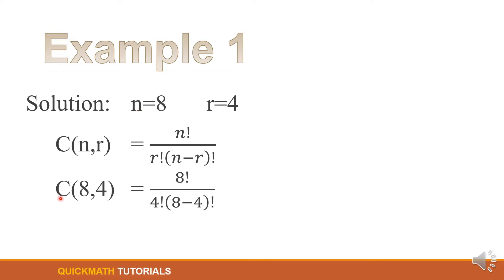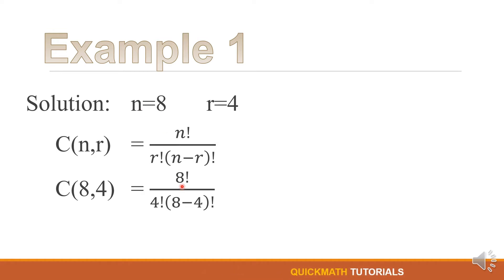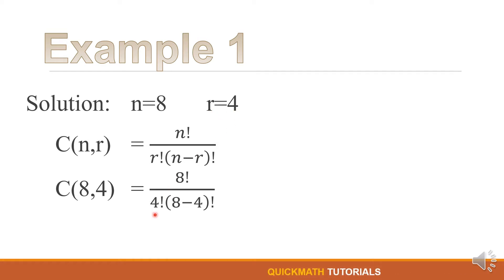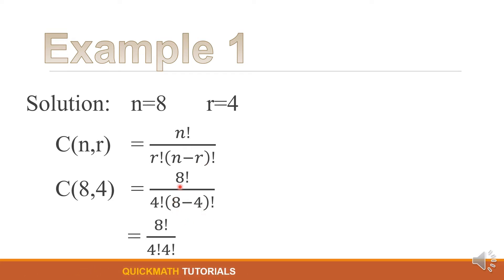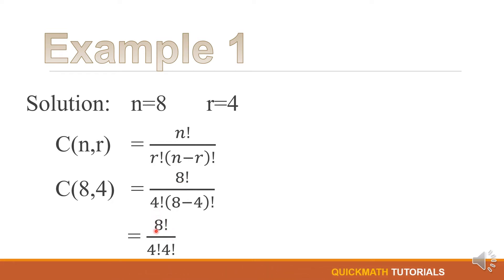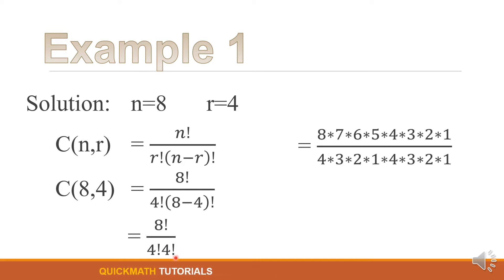We have the combination of 8 objects taken 4 at a time is equal to 8 factorial over 4 factorial times (8 minus 4) factorial. Then we will just copy the numerator: 8 factorial over 4 factorial times 4 factorial, since 8 minus 4 equals 4. Then let's simplify.